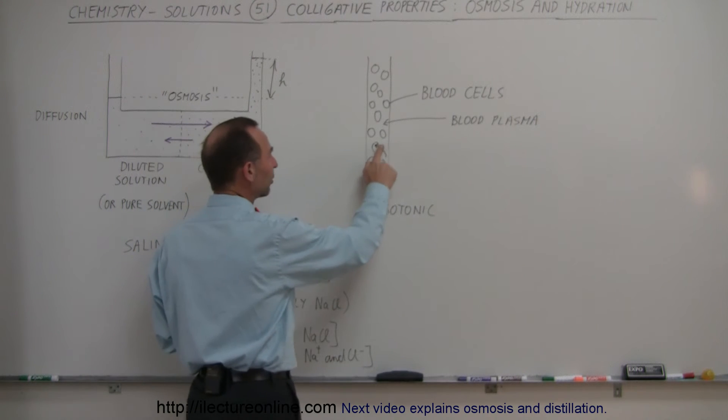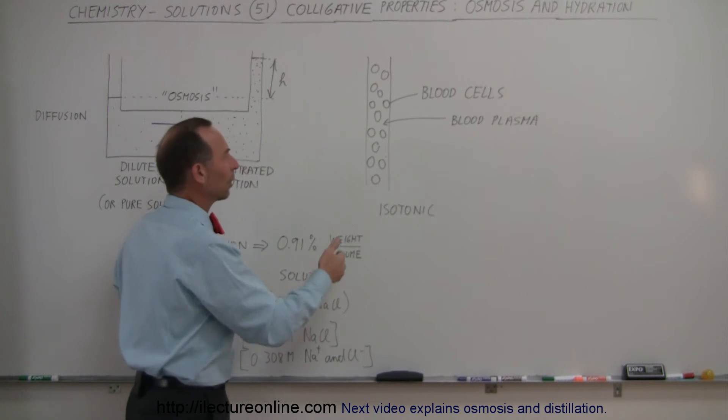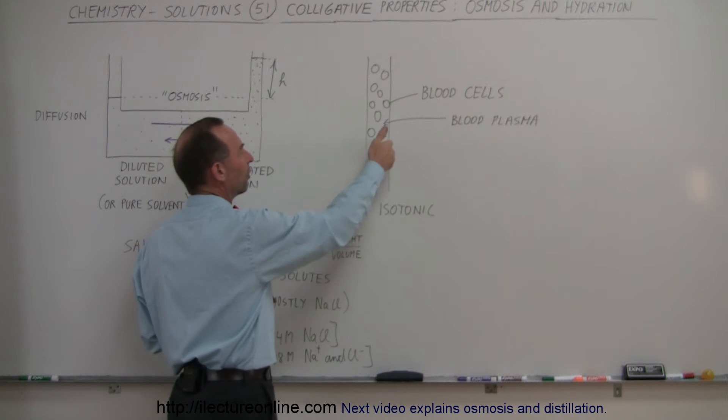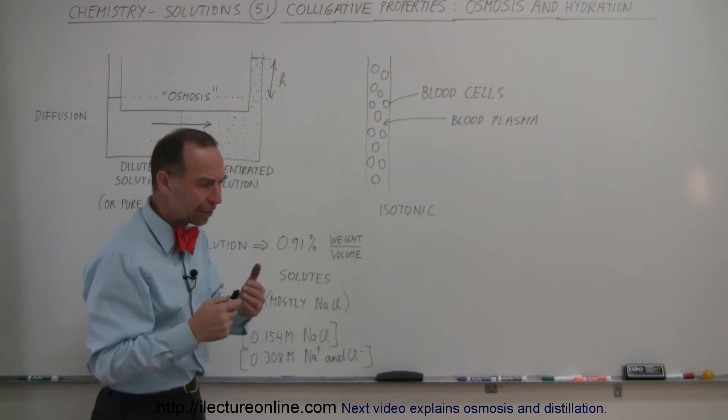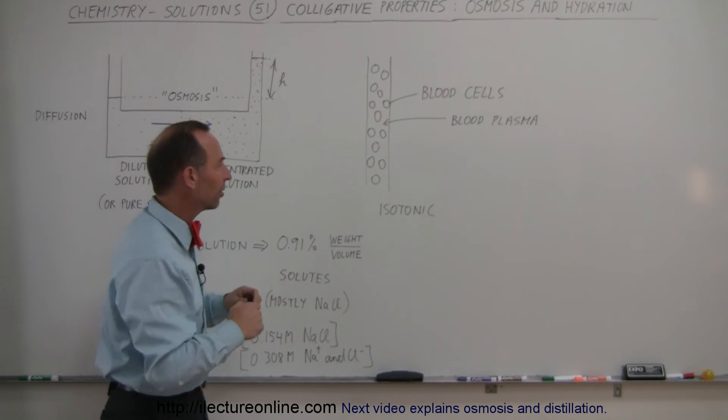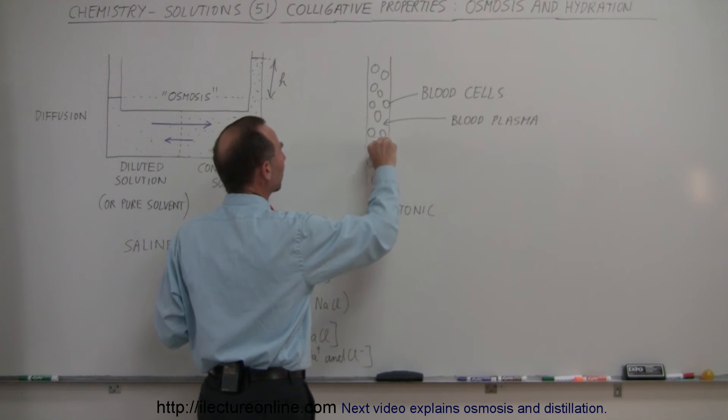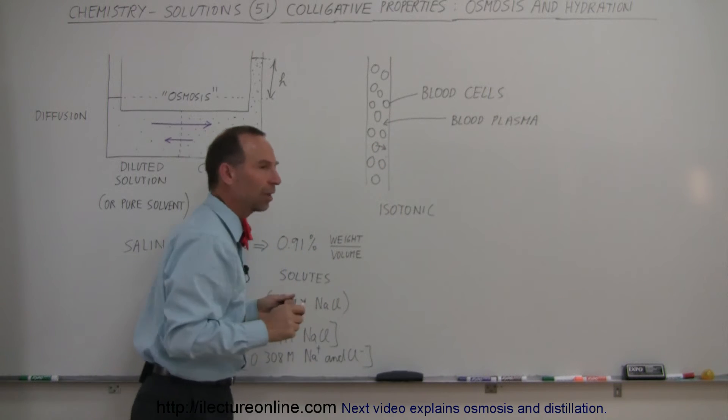On the other hand, when you get really thirsty and you're not replenishing the water, the concentration of the blood plasma gets to be higher in solute than the blood cells. Water now begins to flow from the blood cells into the blood plasma.